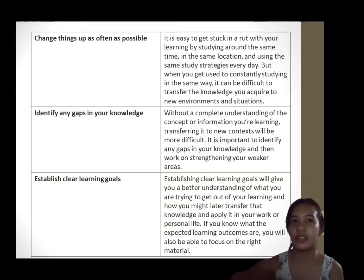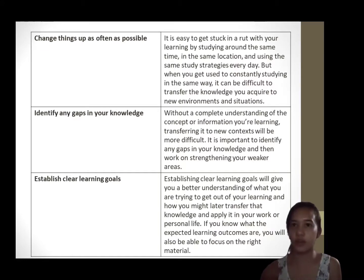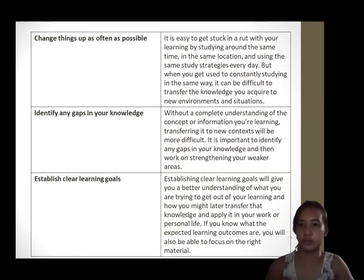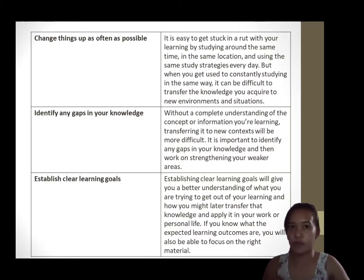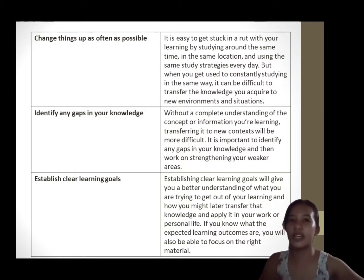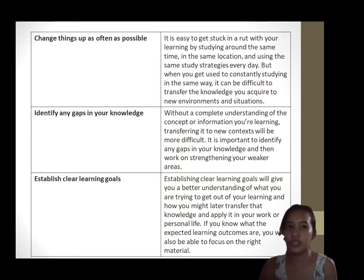Number six is to establish clear learning goals. Establishing clear learning goals will give you a better understanding of what you are trying to get out of your learning and how you might later transfer that knowledge in your work or personal life. If you know what the expected learning outcomes are, you will be able to focus on the right materials. When setting learning goals, it is better to be specific rather than general so you can measure your progress. Make sure your goals are realistic too — for example, if you are learning a new language, making it your goal to learn the vocabulary and phrases necessary to go shopping or eat at a restaurant is more doable than aiming to be fluent within one month.